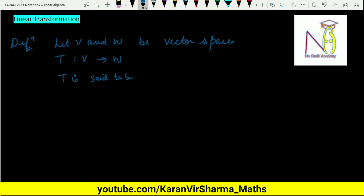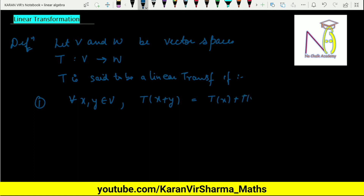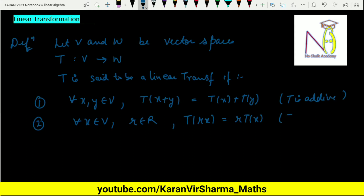T is a linear transformation if it satisfies two conditions. The first condition is: for all X and Y belonging to V, T(X + Y) = T(X) + T(Y). The second property is: for all X belonging to V and R belonging to the reals, T(RX) = R·T(X). The first property is called the additive property, and the second is called homogeneity. If both properties hold, then T is a linear transformation.